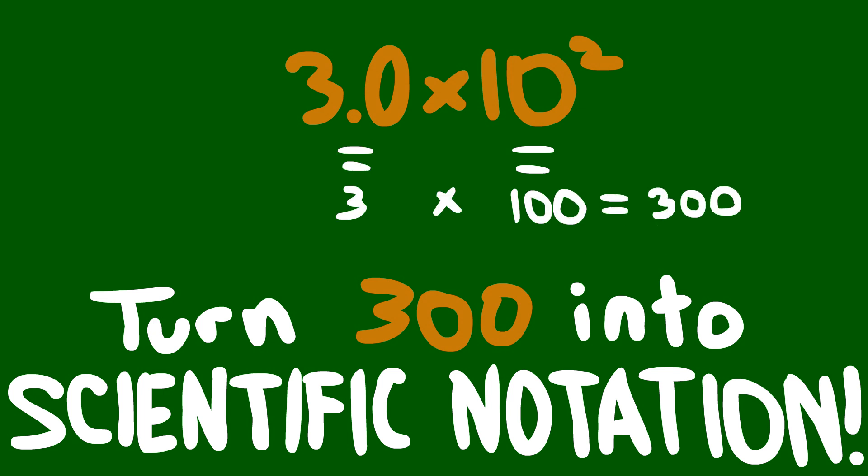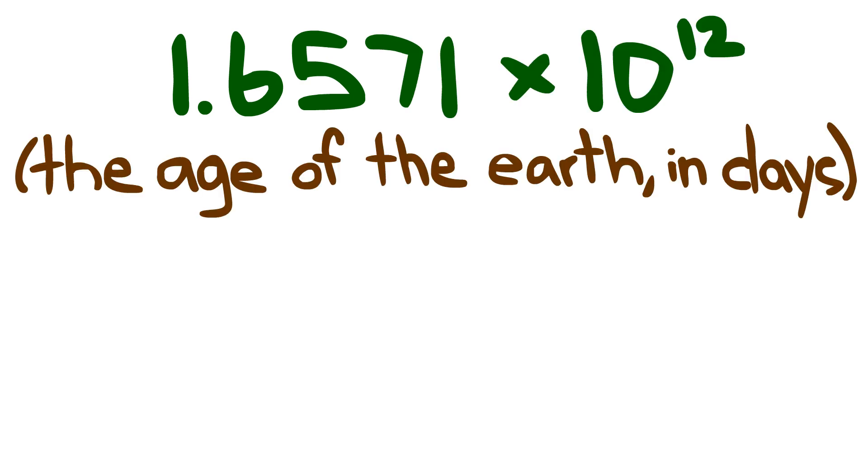That's three hundred, so there's your proof. Scientific notation uses exponents with a base of ten, so you don't have to write out so many zeros again and again and again.